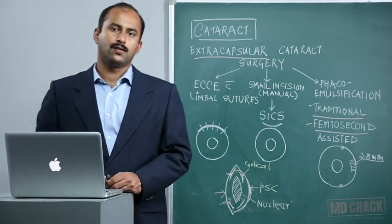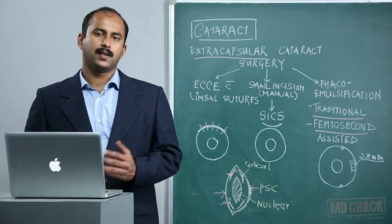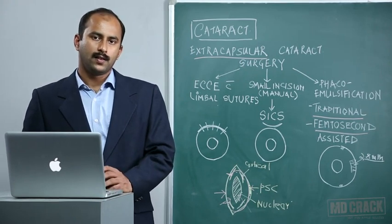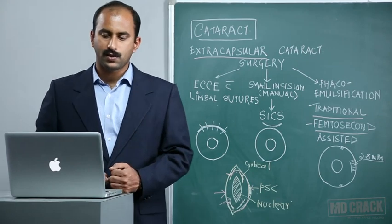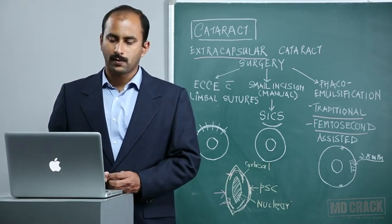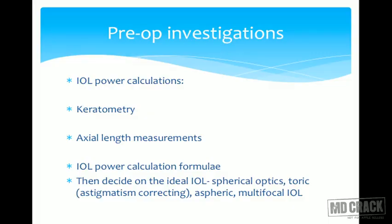Femtosecond-assisted cataract surgery uses the femtosecond laser to construct incisions, make the capsulotomy opening, and debulk the nucleus; only the lens removal is completed by the conventional ultrasonic phacoemulsifier. Coming back to pre-operative investigations, IOL power calculation requires keratometry and axial length measurements, which are incorporated into IOL power calculating formulae — mathematically derived regression formulae applied to the obtained values to calculate intraocular lens power.